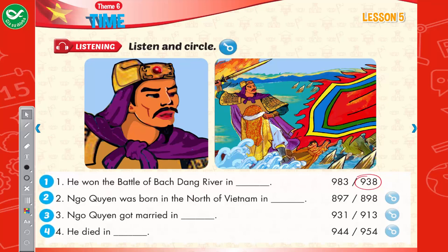When was he born? He was born in 897. Where was he born? In the north of Vietnam. Was he married? Yes. When did he get married? He got married in 931 to Lady Yung.